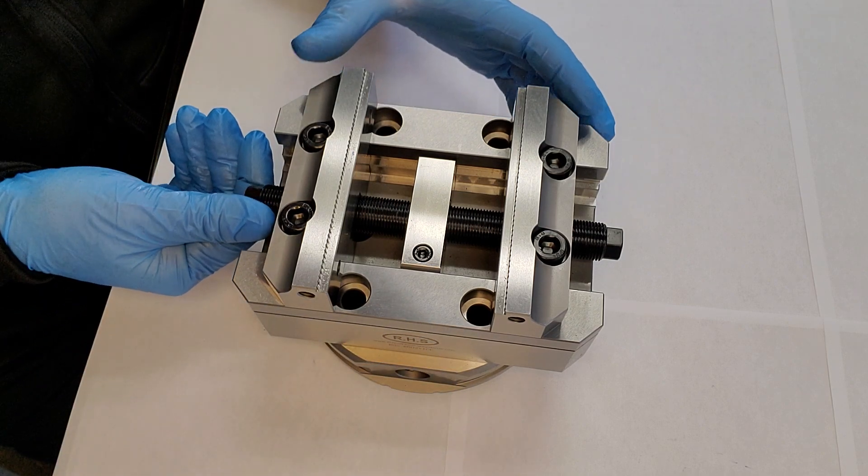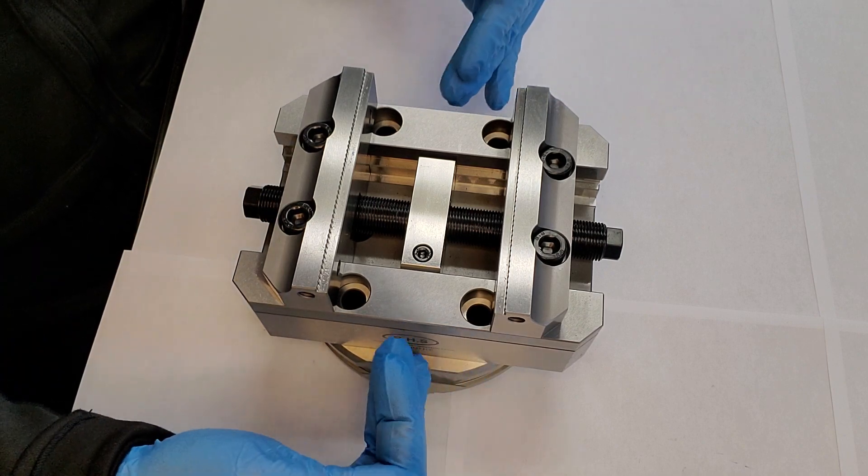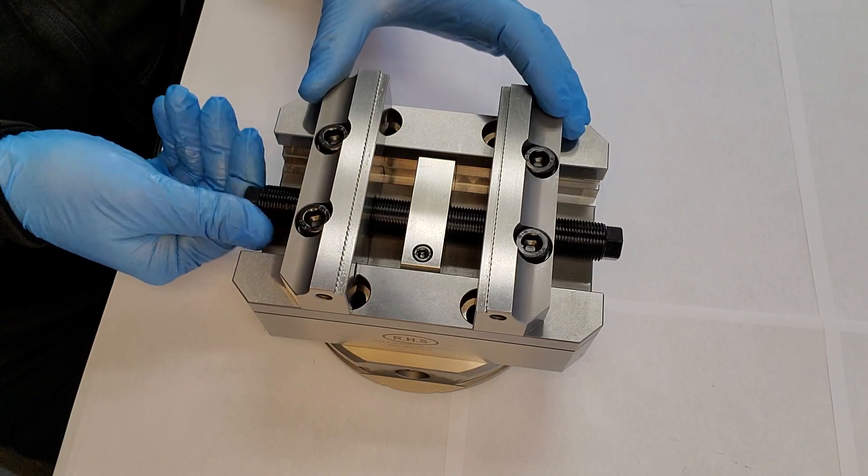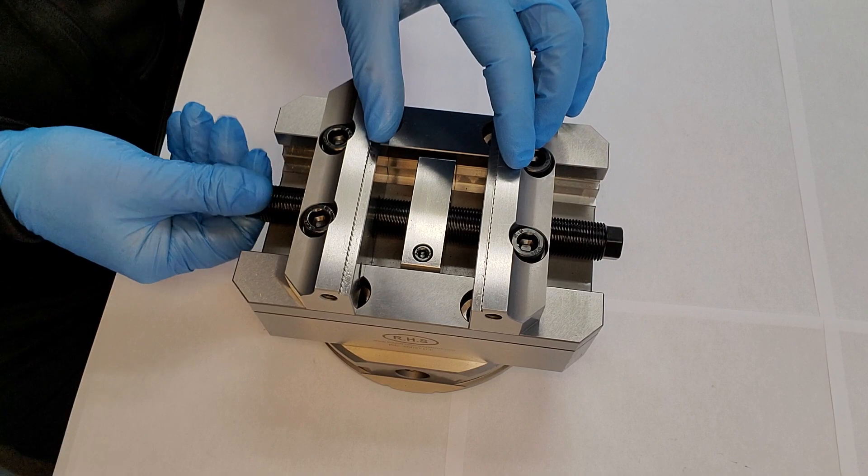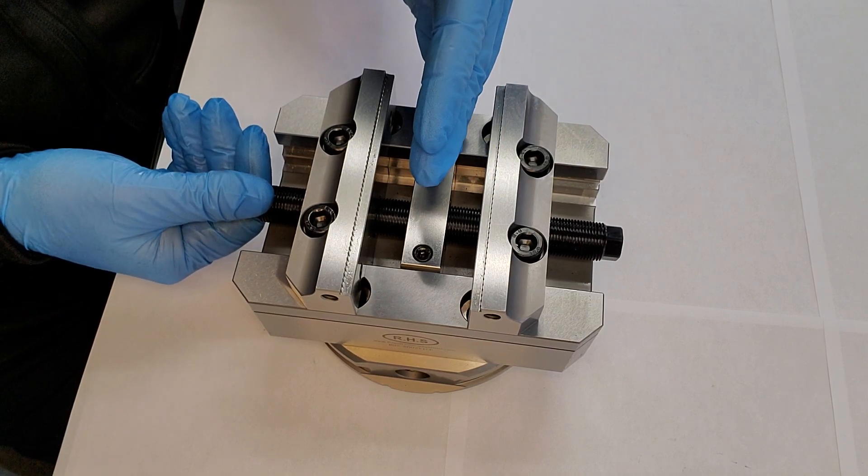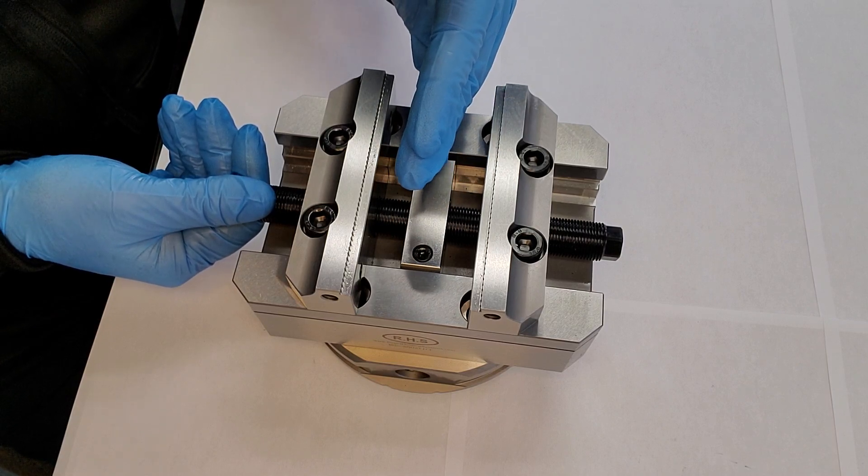The beauty of a self-centering vise is, once you've established your datum or the center of your workpiece and you tighten the manual shaft, you can see the jaws both closing at the same time. This will keep your workpiece centralized, so every single workpiece will always have your datum zero on the center.